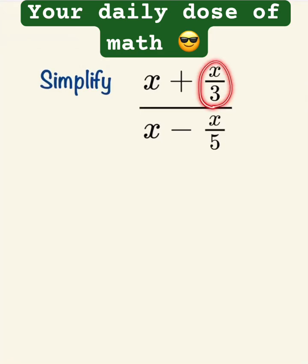This is complicated because we have a fraction in the numerator and a fraction in the denominator. So we're going to solve this piece by piece. We're going to simplify the numerator first, then the denominator, and then we're going to put them together.